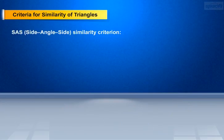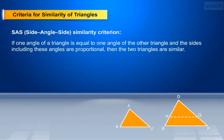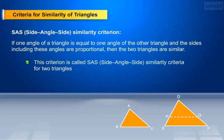Let us discuss about SAS — Side-Angle-Side — similarity theorem or criteria. If one angle of a triangle is equal to one angle of the other triangle, and the sides including these angles are proportional, then the two triangles are said to be similar. This criterion is called the SAS — Side-Angle-Side — similarity criteria for two triangles.